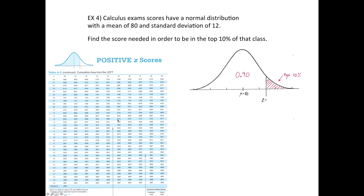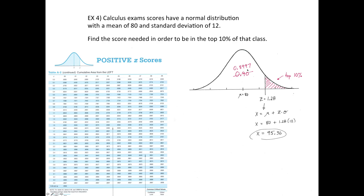Looking for the value closest to 90% in the table, we find 0.8997, which corresponds to z equals 1.28. So z equals 1.28. The formula for finding the score is derived from the z-formula solved for x: x equals the mean plus z times the standard deviation. Plugging in the values gives x equals 95.36, meaning you would need a 95.36 in order to be in the top 10% of that calculus class.